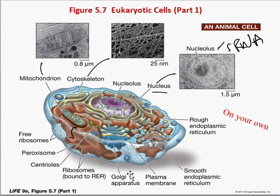The next is the Golgi. This is a site that receives proteins packaged from the ER, and further modifies, concentrates, and sorts them.